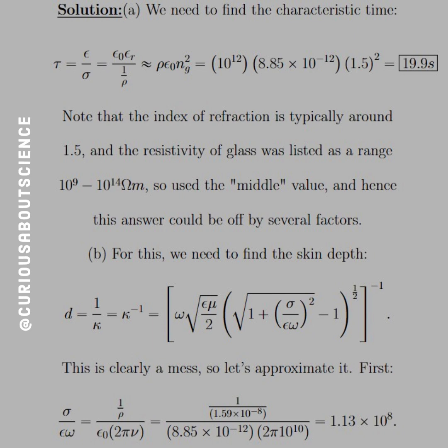What we see is this equals rho epsilon_0 n_glass squared, approximately, and these were all found from tables in the book. If we have the resistivity at 10^12 for glass and we know epsilon_0 and the index of refraction is 1.5 roughly, then the characteristic time is about 19.9 seconds. Note that the index of refraction is typically around 1.5, and the resistivity of glass was listed in the range of 10^9 to 10^14 ohm meter. So I just picked the middle value, and hence the answer could be off by several factors.